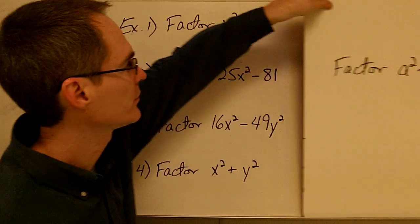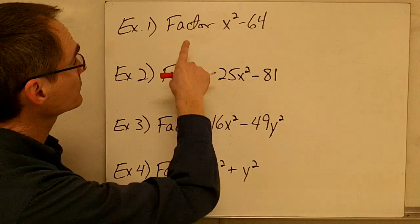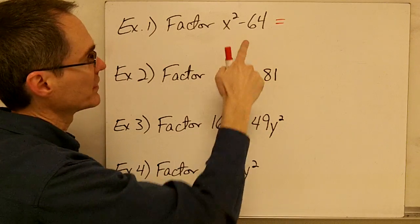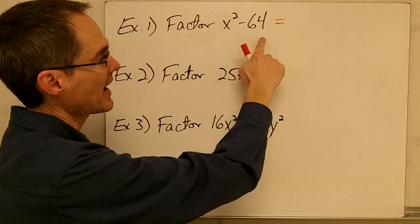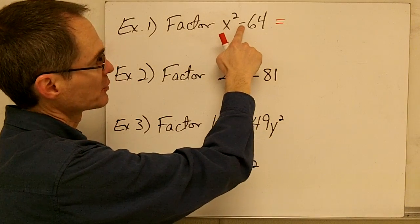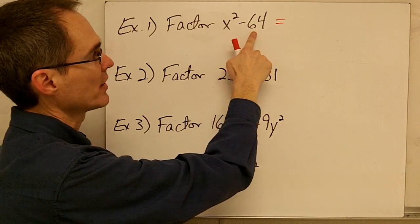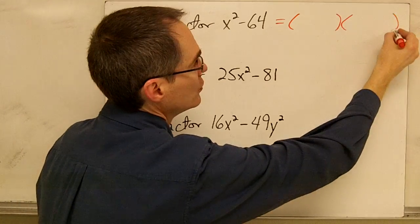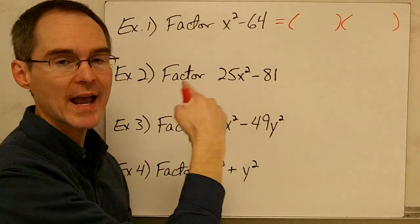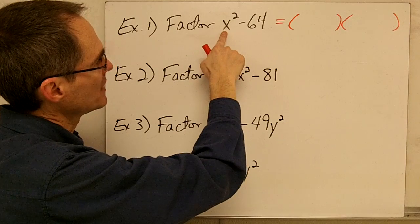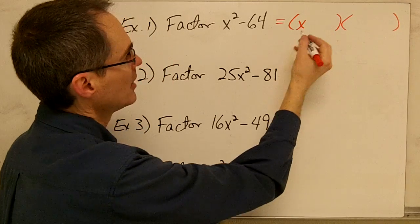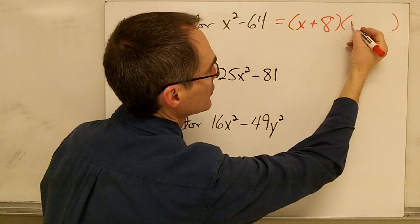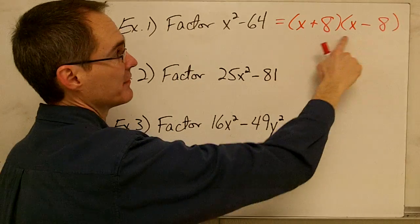Let's look at some examples. Example one: factor x squared minus 64. This expression is the difference of two perfect squares — x squared is a perfect square, and 64 is 8 squared. So I'll write this as two binomial factors. The square root of x squared is x, and the square root of 64 is 8. That gives us x plus 8 times x minus 8.